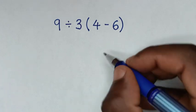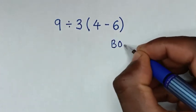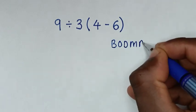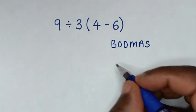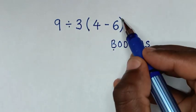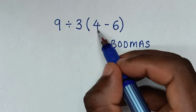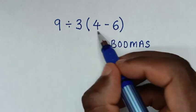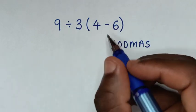Let's review the BODMAS rule, where B stands for brackets. In this problem, we have brackets, so we start with the operation inside: 4 minus 6, which equals negative 2.